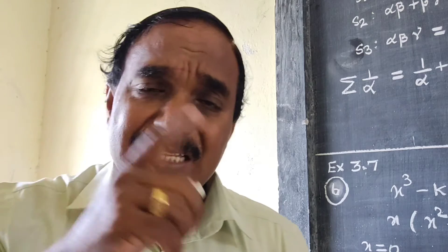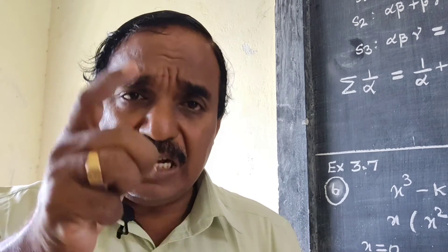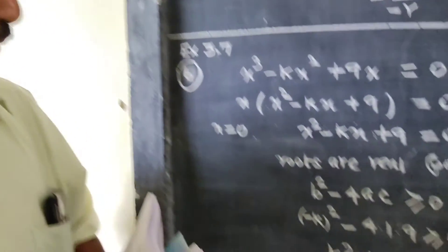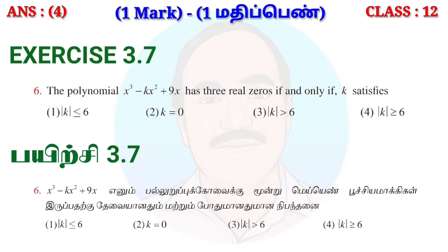Exercise 3.7, problem number 6. The polynomial x³ - kx² + 9x has three real zeros if and only if k satisfies what condition?